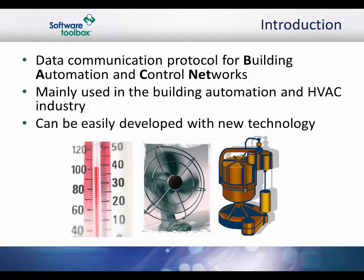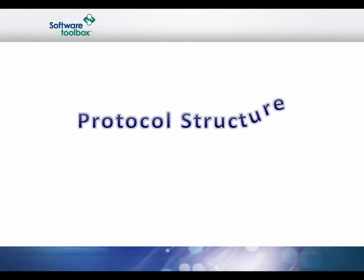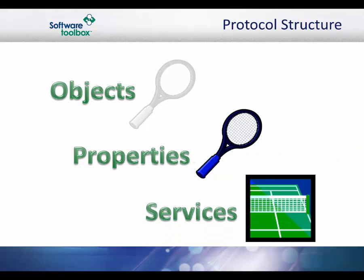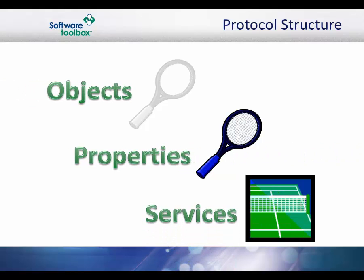If a vendor creates a new functionality for which communication is required, the vendor can add new properties to existing object types, or create new object types that are accessed in exactly the same way as the ones defined in the standard. BACnet specifies most of the common functions in order to remain applicable to almost any kind of monitoring or control application. The main components of the protocol include objects, properties, and services. An object is simply a collection of information related to a particular function that can be uniquely identified and accessed over a network in a standardized way.